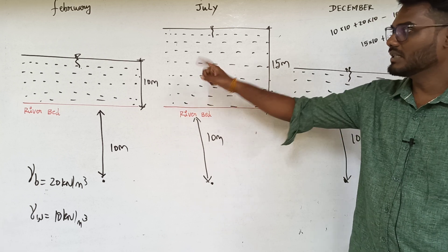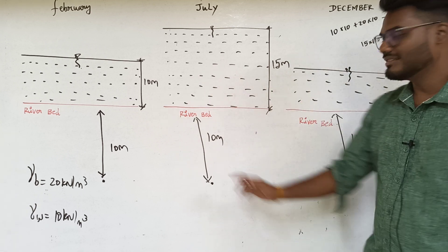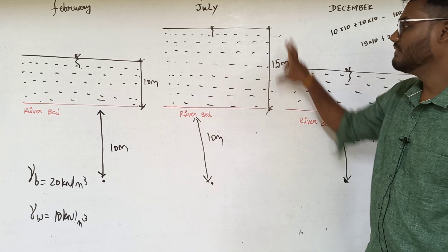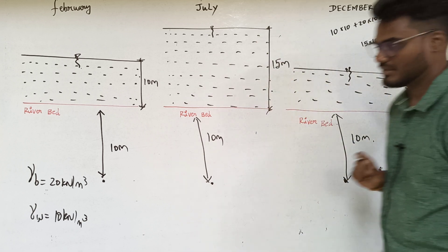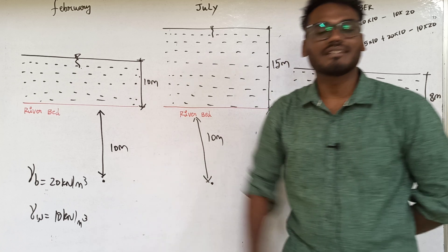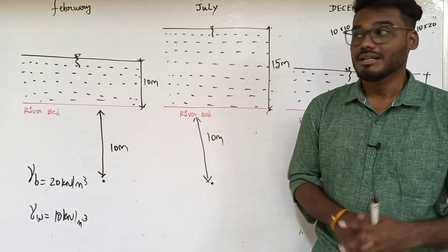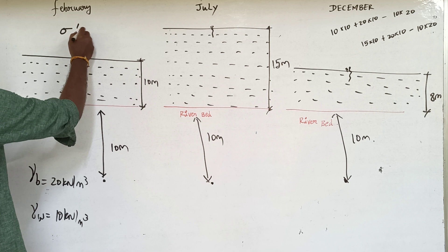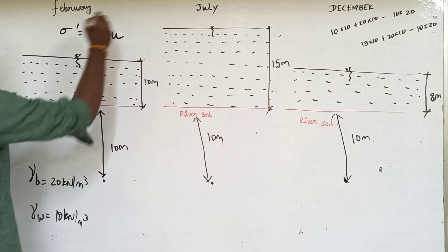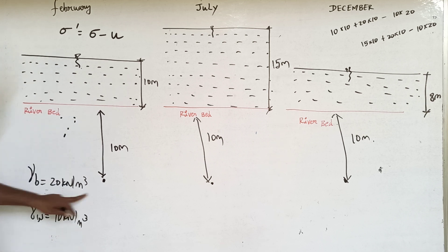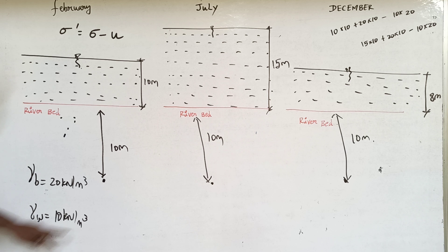So what is the question? When you look at the water table, the effect changes. In February it is very low; in July it is 15 m; in December it is 8 m. My question is: if you have 10 meters of soil below the river bed, can you calculate the effective stress? Unit weight of soil is 20 kN/m³ and unit weight of water is 10 kN/m³.